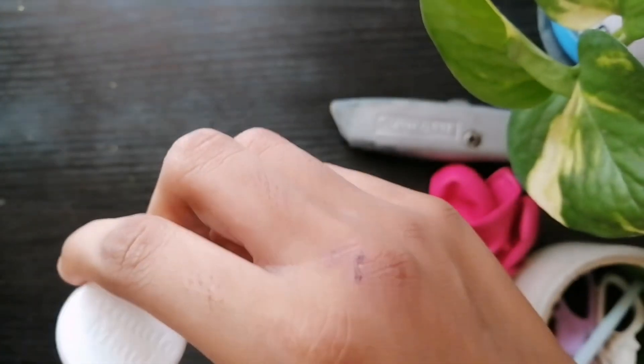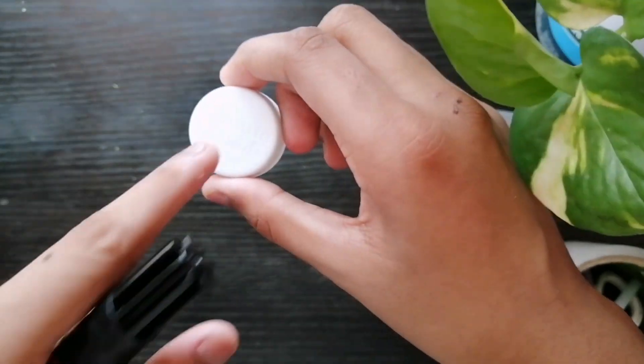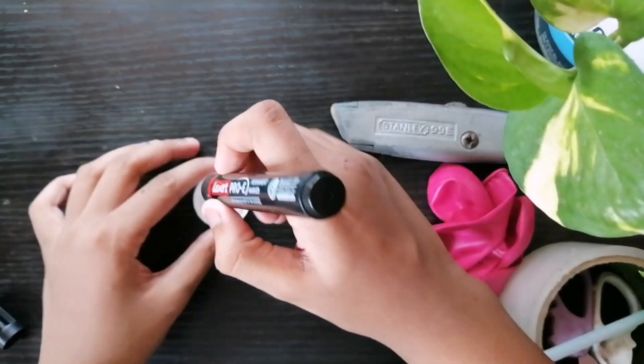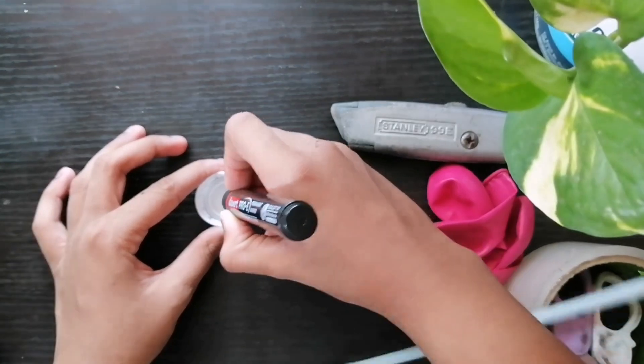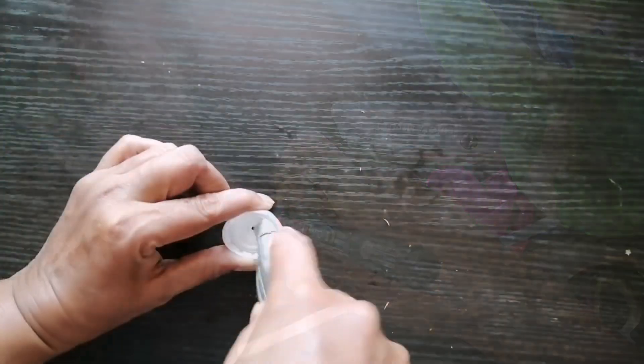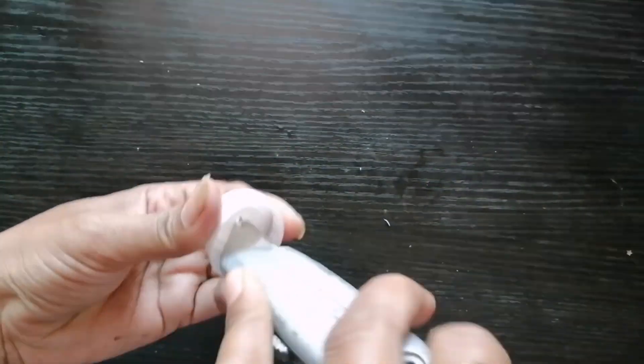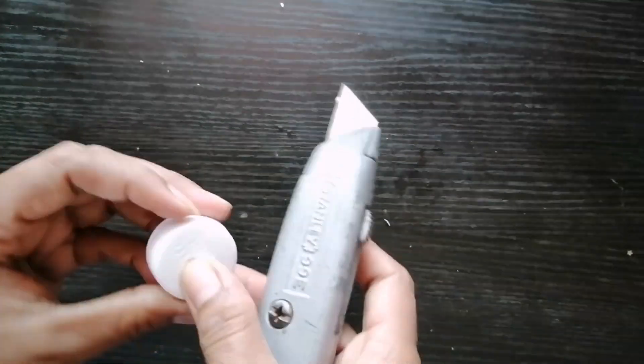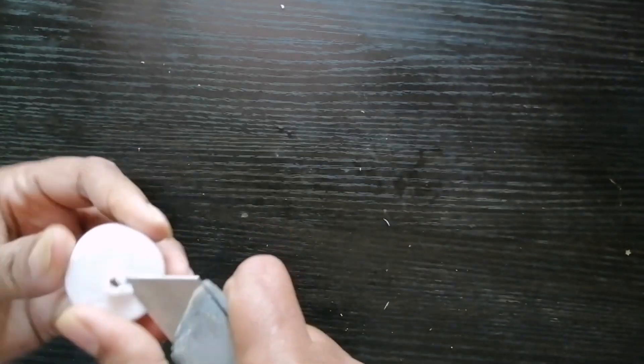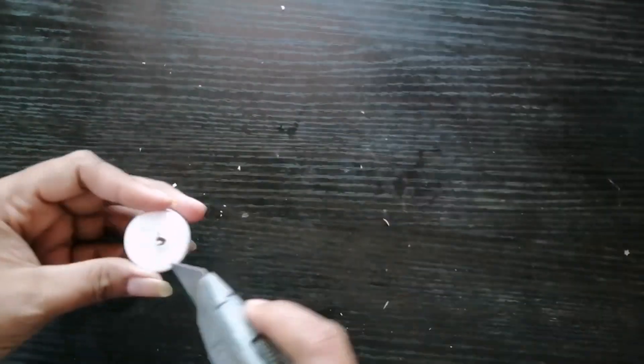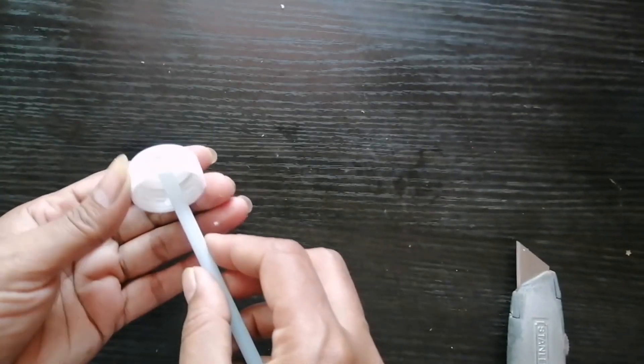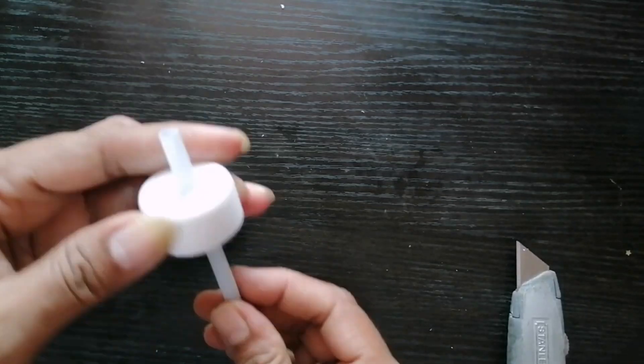Now, make a hole in the center of the bottle cap. Try to insert the straw through the hole. Straw should pass through it.